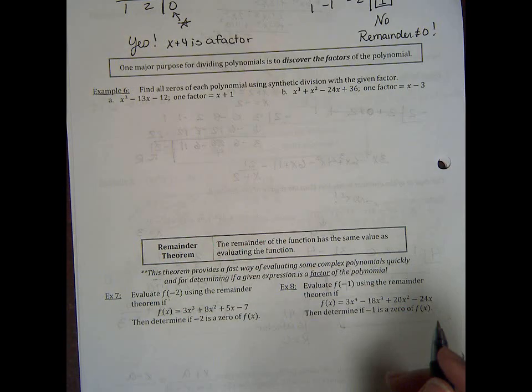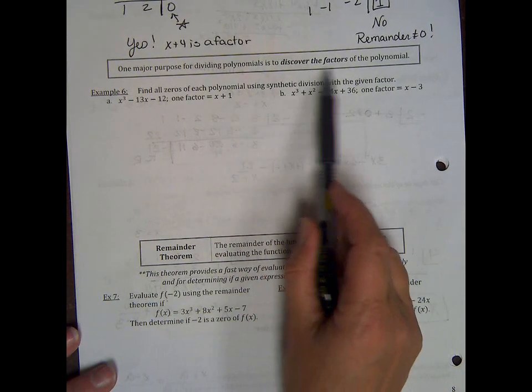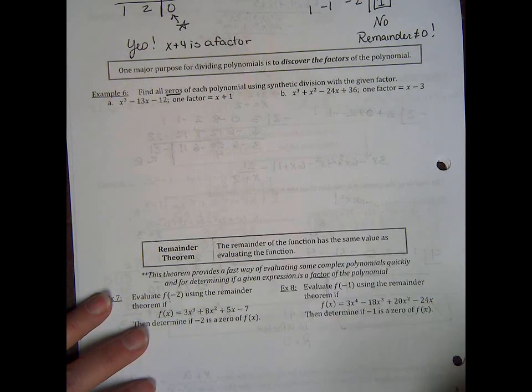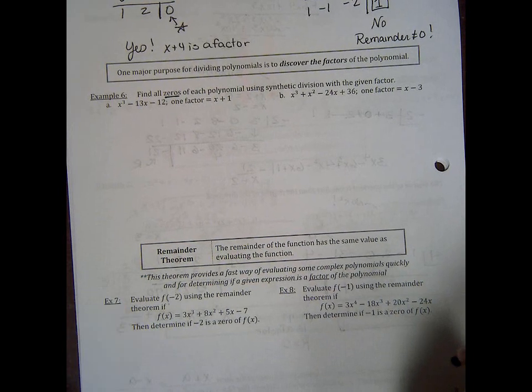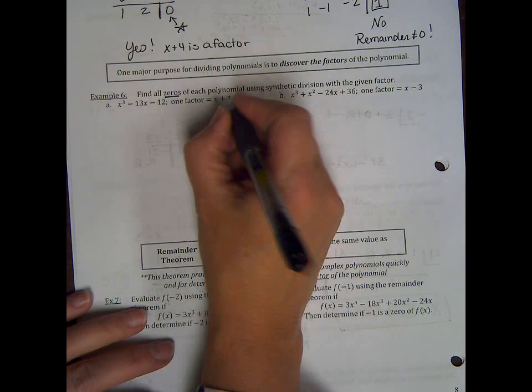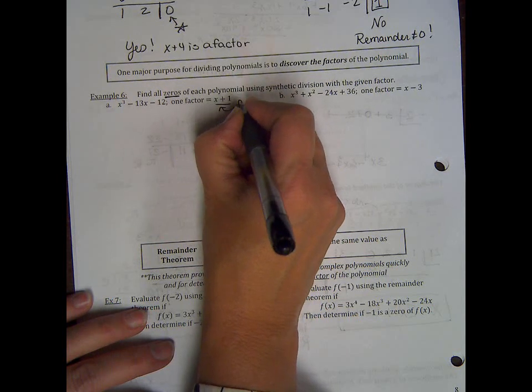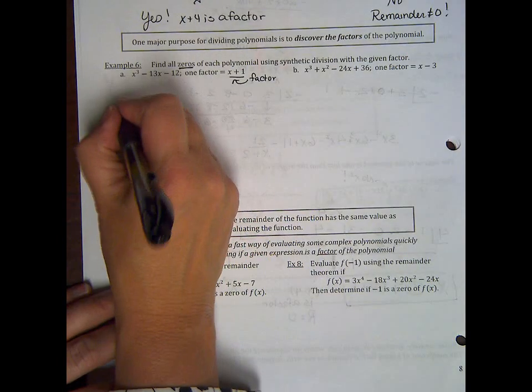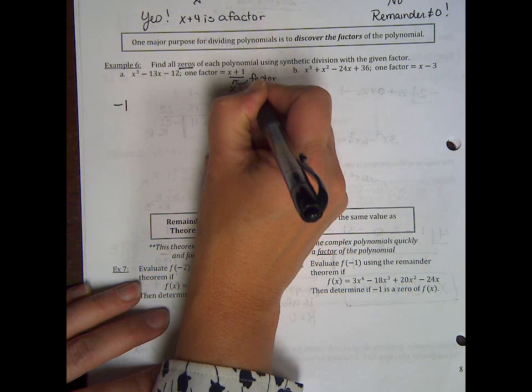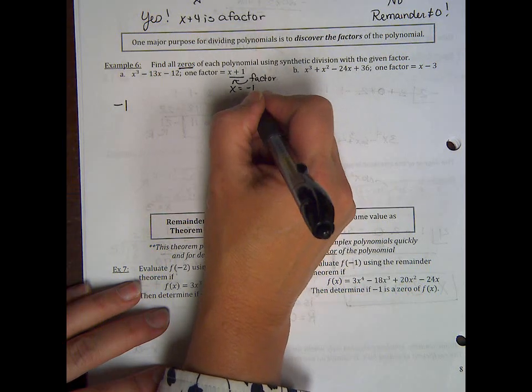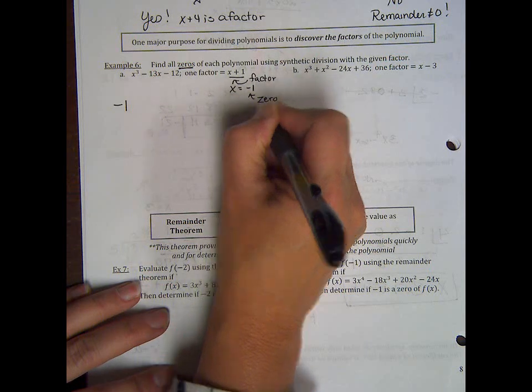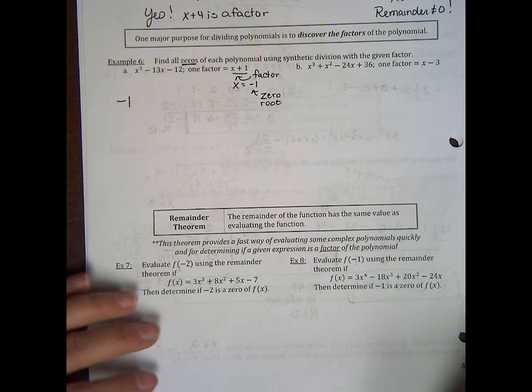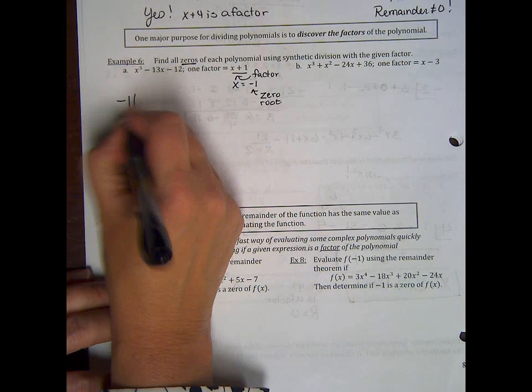One major purpose of dividing polynomials is to discover the factors of the polynomial. So find all the zeros. Remember zeros is found by finding factors of each polynomial using synthetic division with the given factor. So we're telling you that this right here is a factor. Now you want to find other ones. So we're going to synthetically divide by negative 1, because if x plus 1 is a factor, x minus 1 is called a zero or a root.